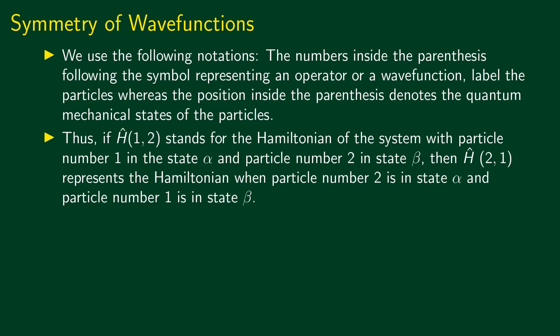First let us fix the notations that we are going to use. If we are considering a two-particle system, we will need to talk about the wave function of the two-particle system or some operator, say the Hamiltonian associated with a two-particle system. Since there are two particles, we shall label them as 1 and 2. These numbers will be put inside a parenthesis along with the wave function or the operator. So we will have expressions like ψ(1,2), H(1,2), H(2,1), etc.